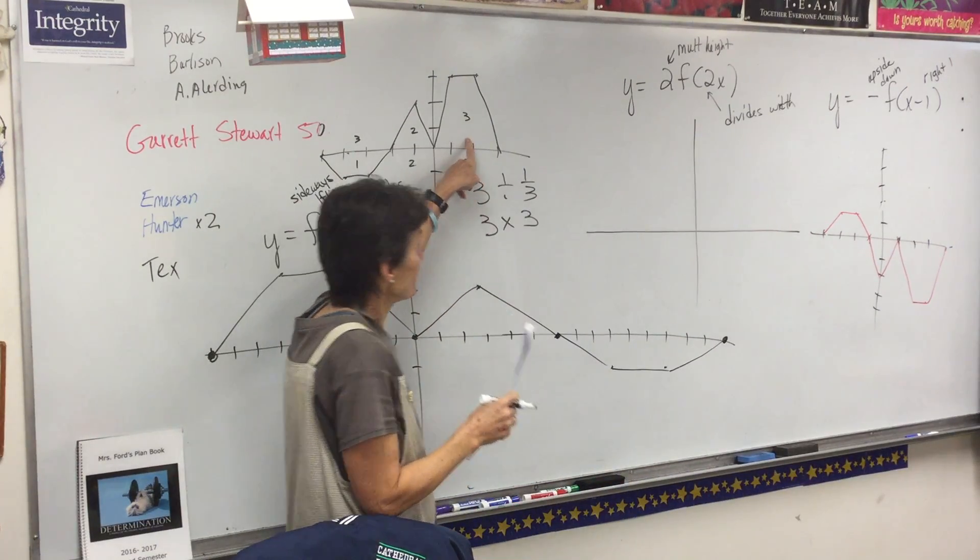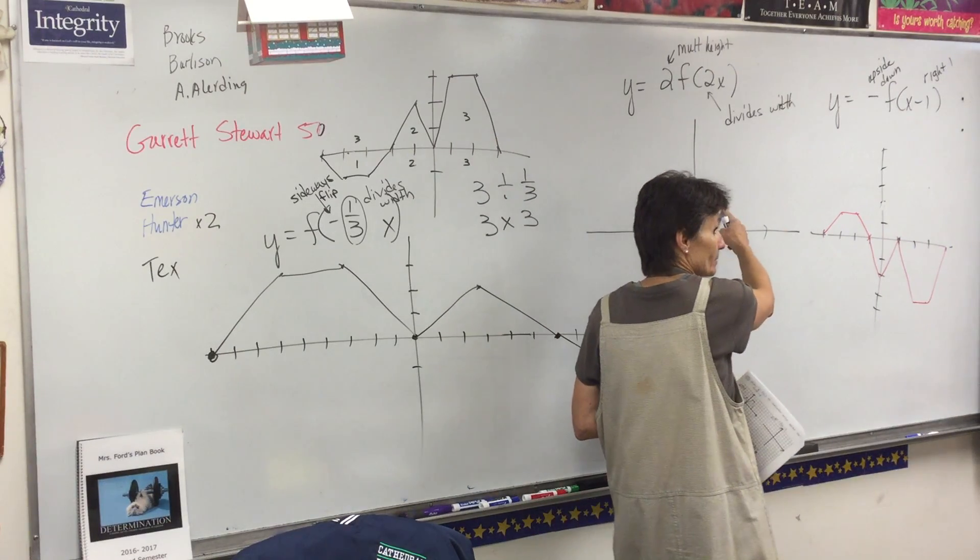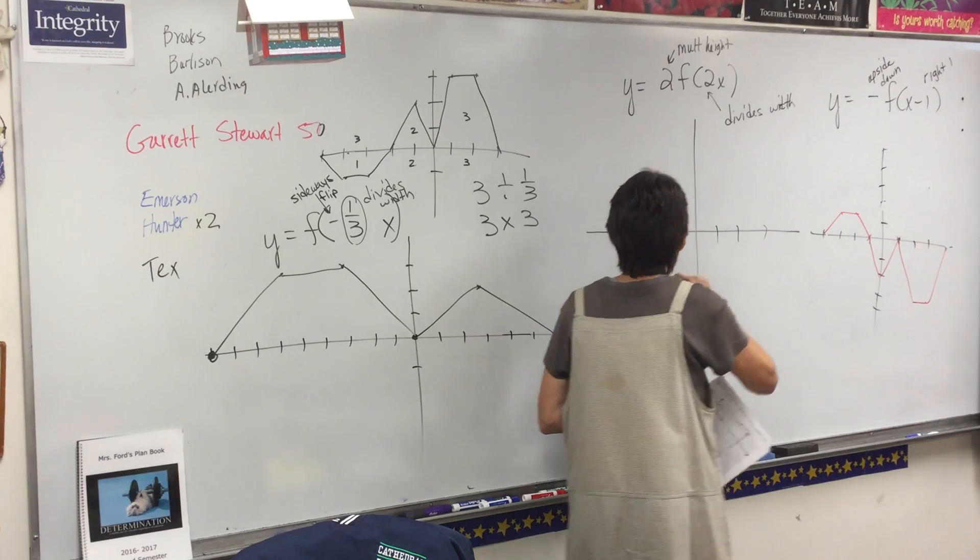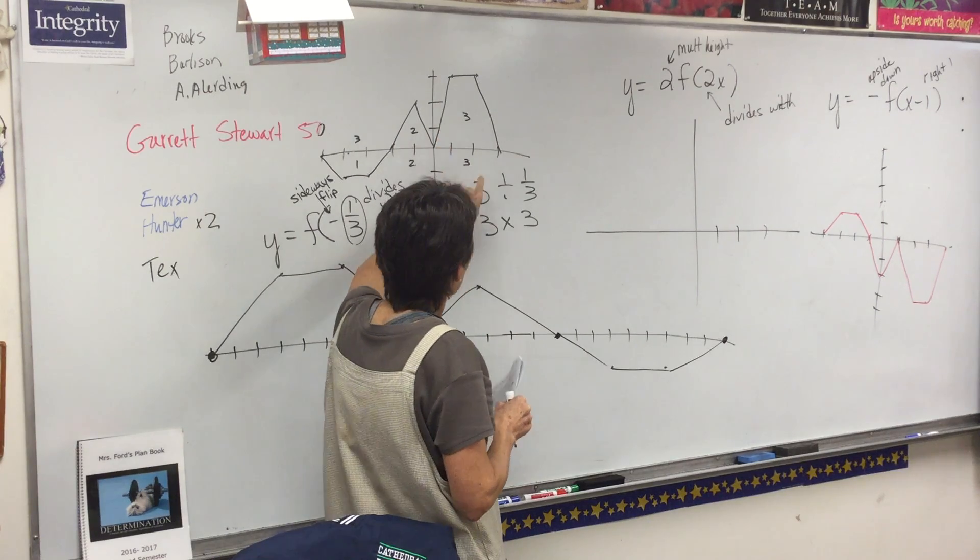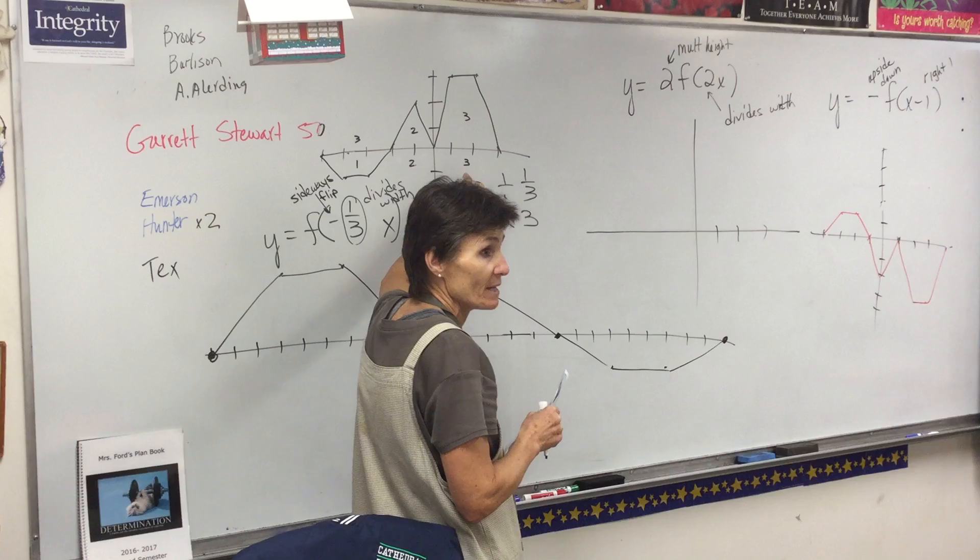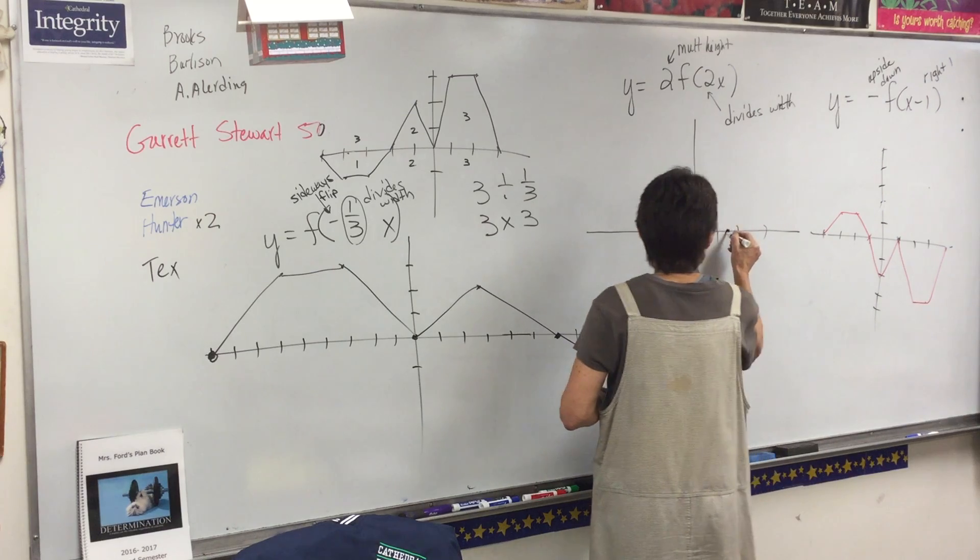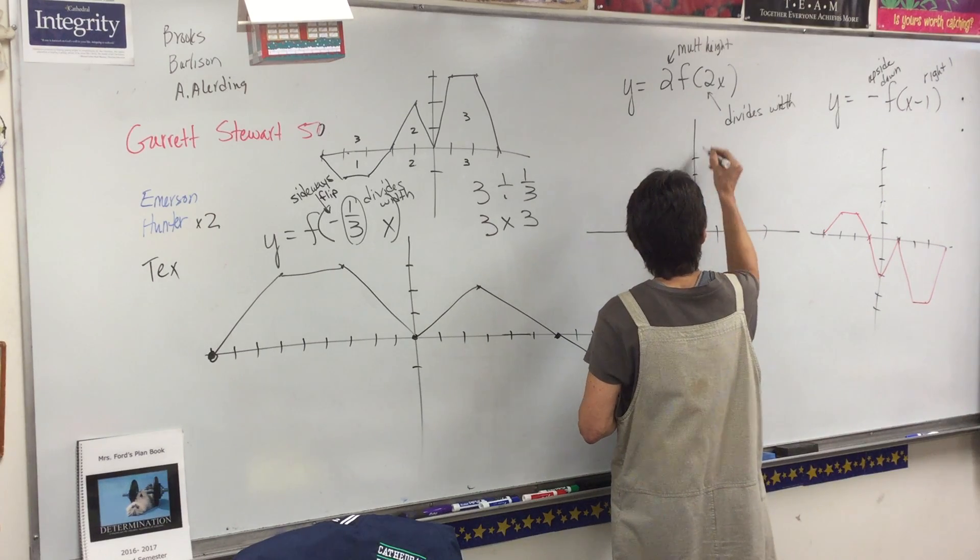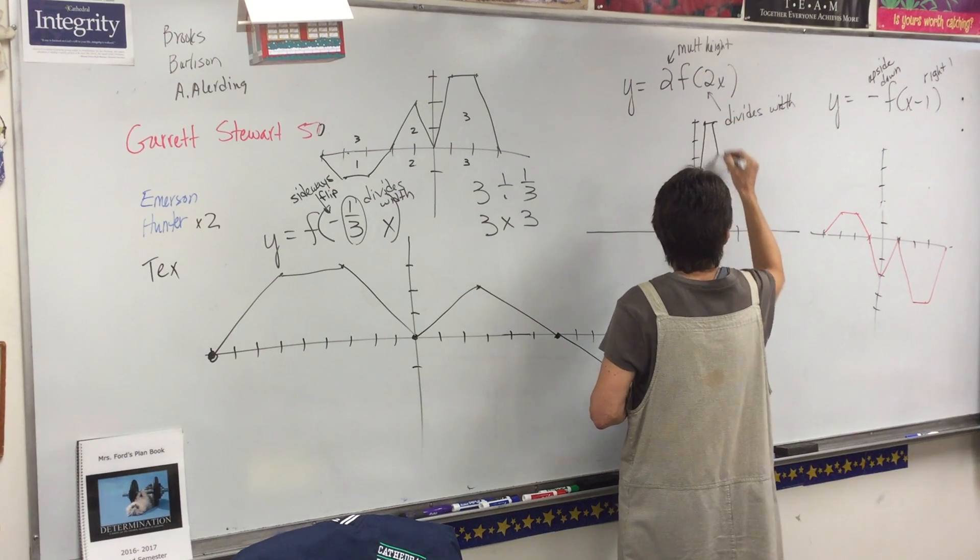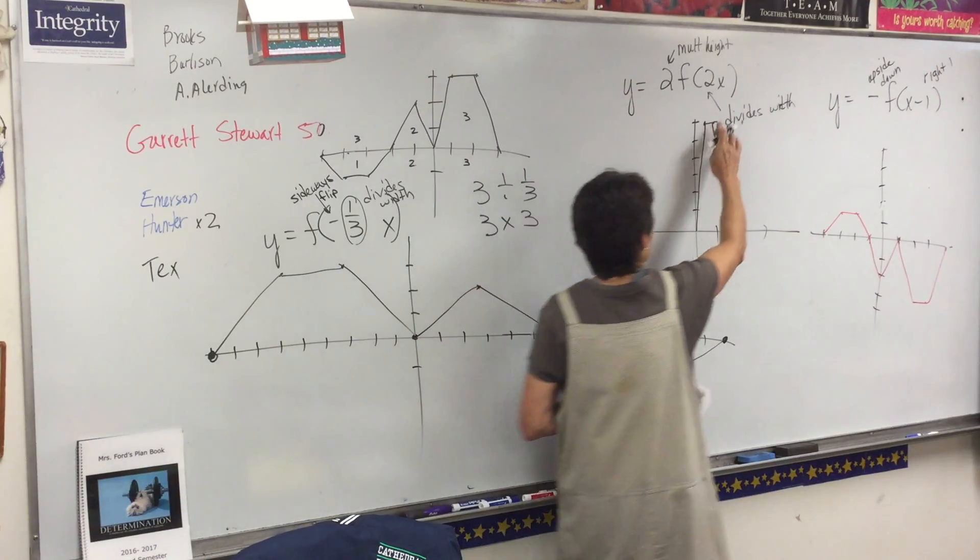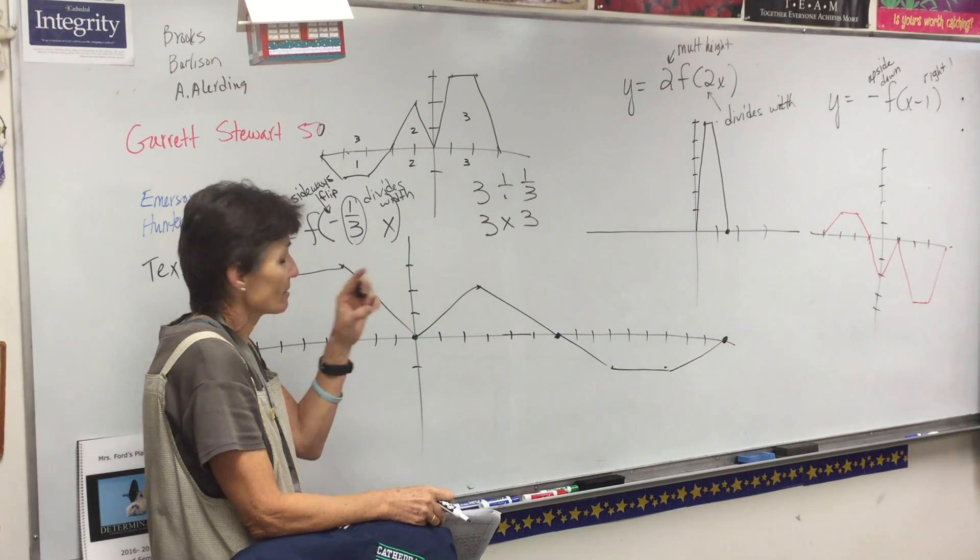This trapezoid right here is going to sit right here. The only difference is it's going to be how tall? We're multiplying the height so it's going to be six, and we're dividing the width so it's only going to be one and a half. So one and a half wide, that would be right here, and six would be right here. So this trapezoid looks like that. He's only one and a half wide but he's six tall.